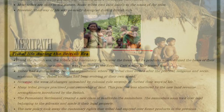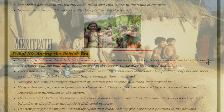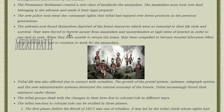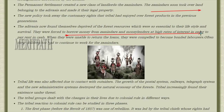Now let's move on to the tribal life during the British era. Until the British era, the tribals used to have their rights on the forest and its products. However, the wave of changes unleashed by colonial rule brought major disruptions — the most significant being the introduction of the land revenue system by the British. The zamindars started taking over lands belonging to the Adivasis, and they were forced to borrow money from them at high interest rates.